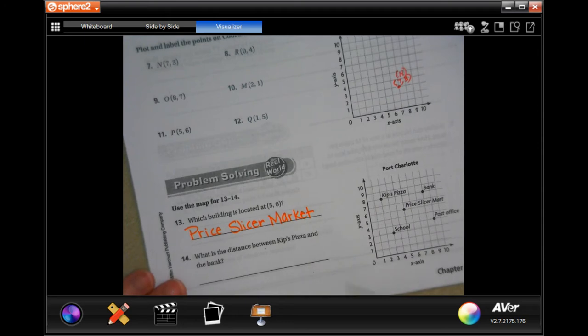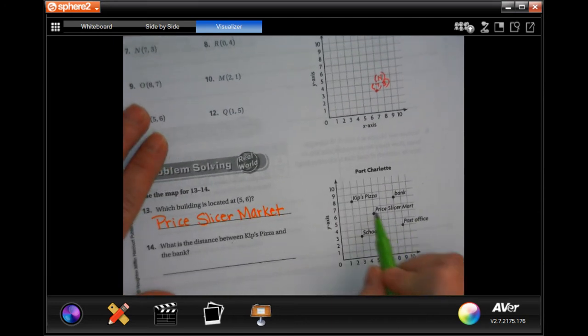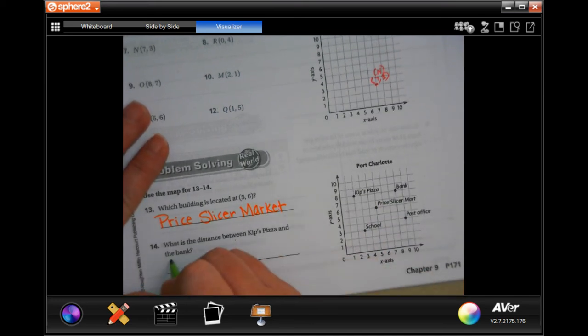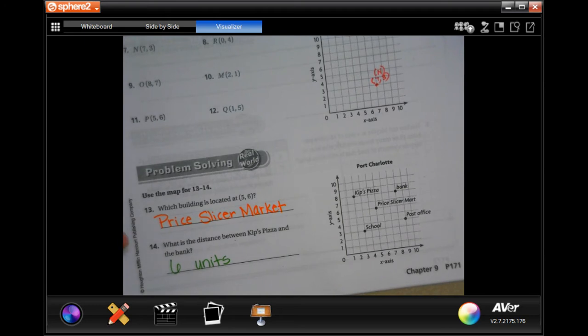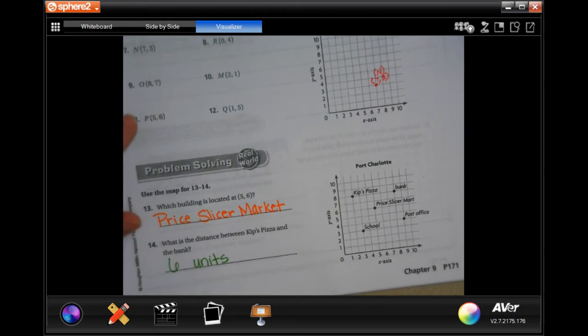What is the distance between Kip's Pizza and the bank? Well, here's Kip's Pizza and here's the bank. So one, two, three, four, five, six units. We're not saying blocks or anything yet. So they're just using units. So we're just going to say six units.